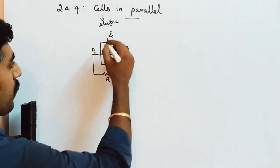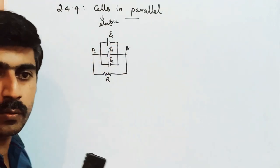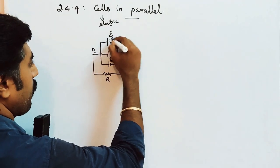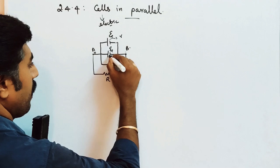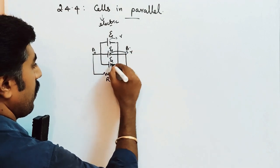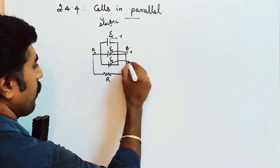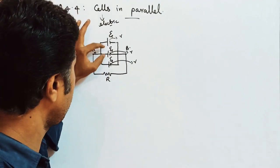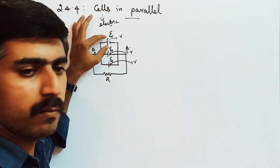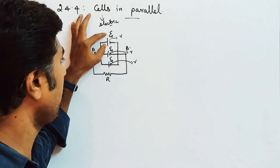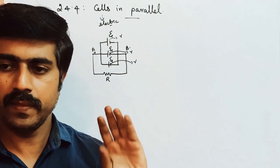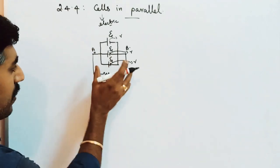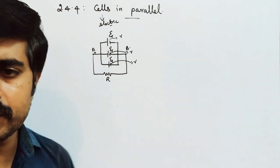A and B are the two terminals of a battery which is connected to an external resistor of resistance R. The EMF and the internal resistance of each cell is also the same. EMF is the same and internal resistance is the same. This is an application of Ohm's law.